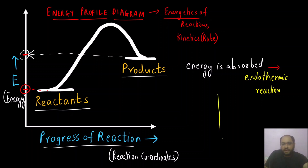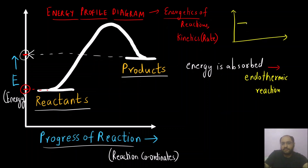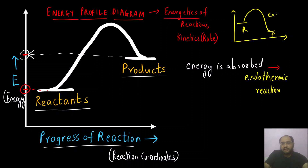For an exothermic reaction, the plot would look like this: the energy of the reactant is higher and the product energy will be lower, because some amount of energy is lost in the form of heat. Energy is lost or given out — that is nothing but an exothermic reaction.